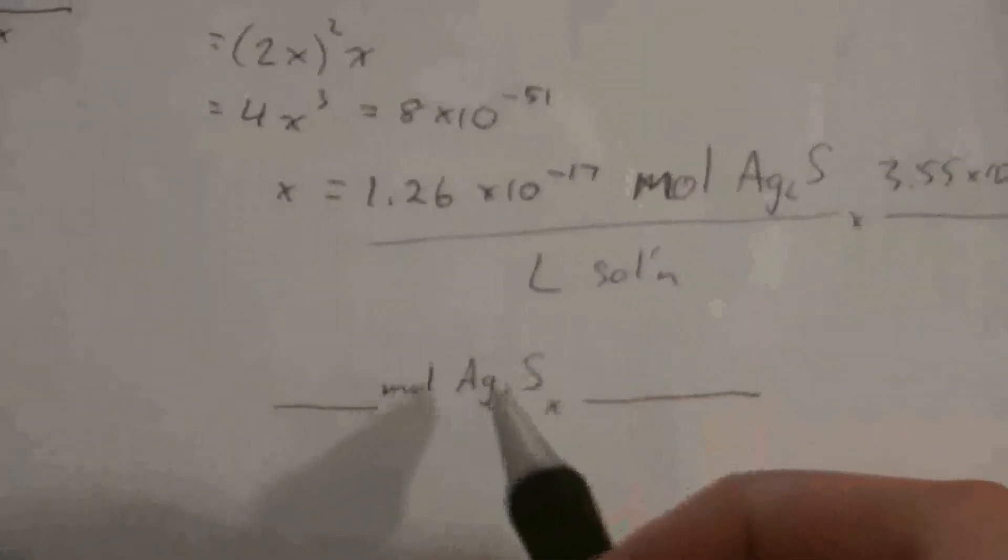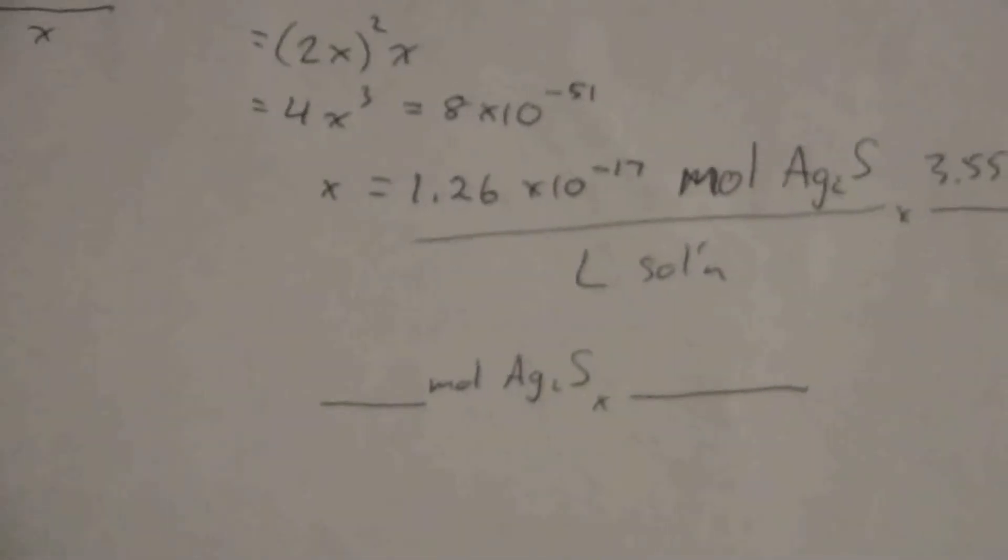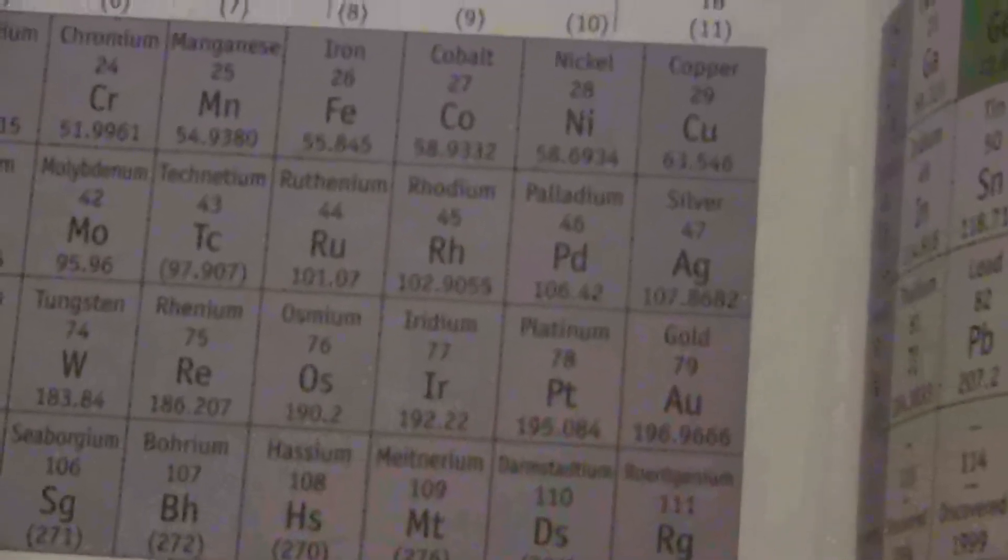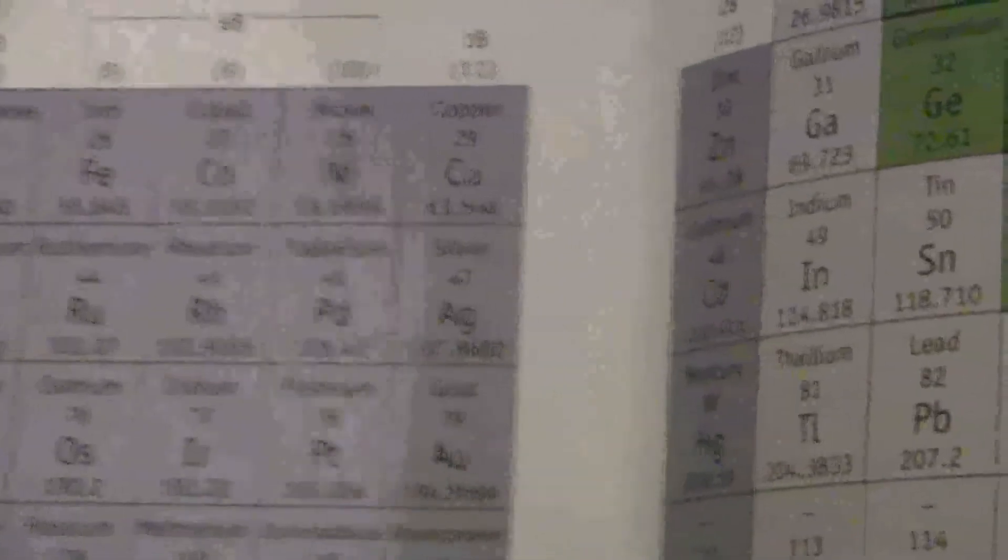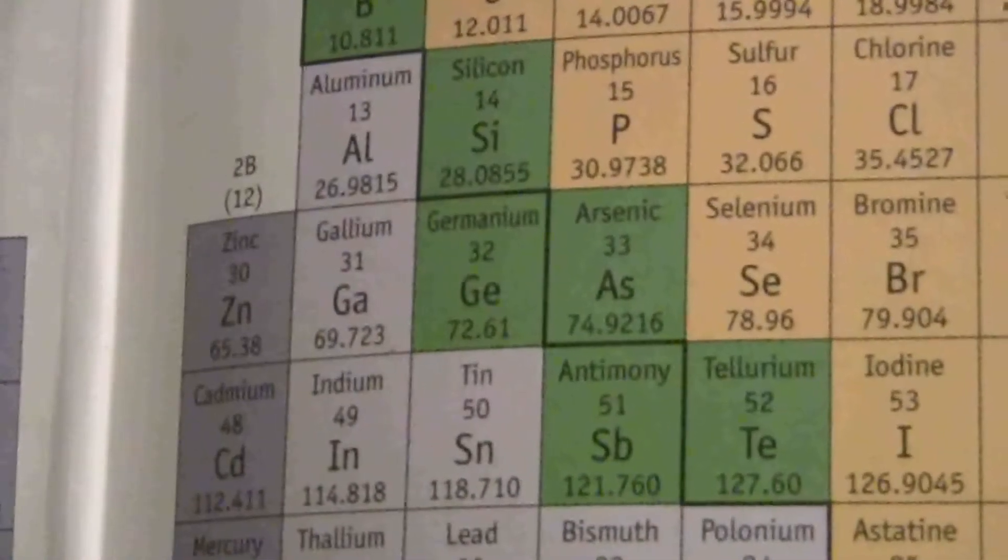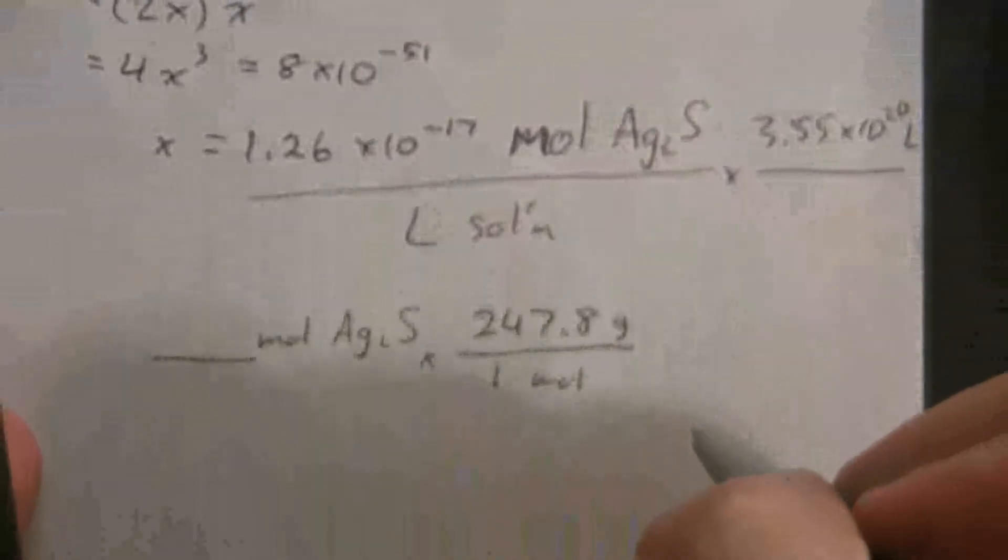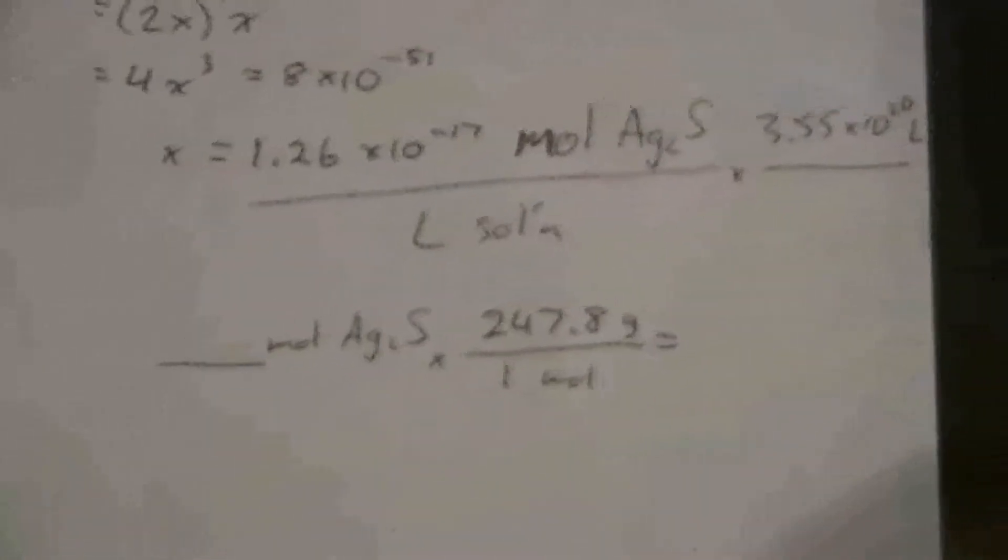That will give me the moles of silver sulfide. Then I will multiply that by the molar mass of silver sulfide, which is going to be - let's see here. We have silver is 107.87, and we have 2 of those. And then sulfide is 32.066. So total we have 247.8. Here we have 247.8 grams to 1 mole.